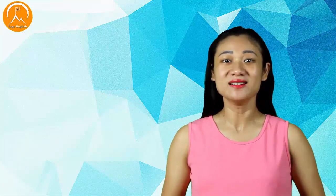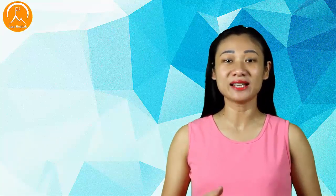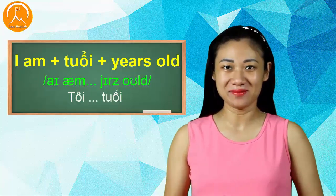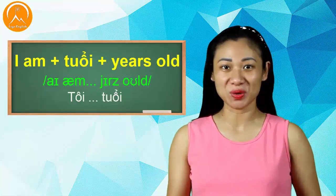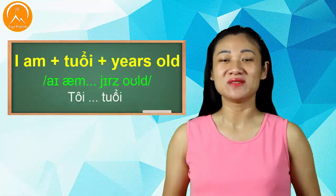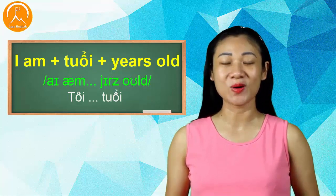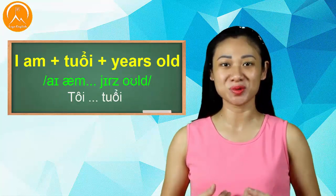Trong bài này, mình sẽ hướng dẫn các bạn cách dùng số để nói tuổi của mình và tuổi của những người khác. Cách nói tuổi của mình rất đơn giản. Các bạn chỉ cần nói "I am" cộng với số tuổi của mình và từ "years old" ở đằng sau là mình bao nhiêu tuổi.